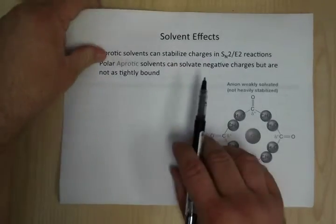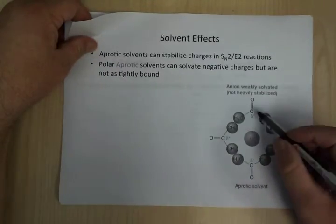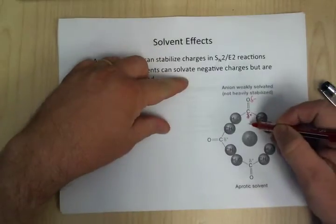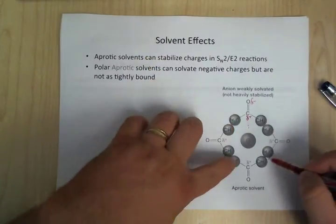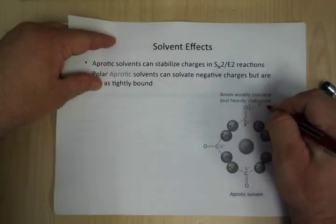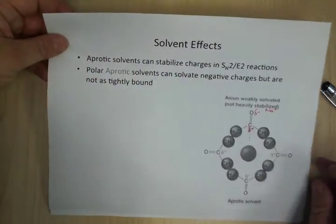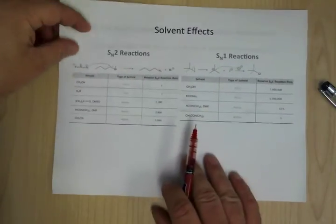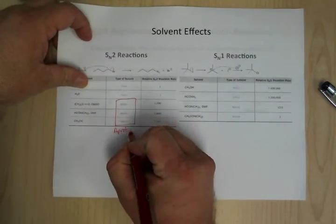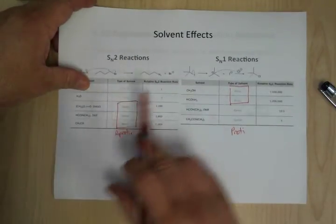Aprotic solvents can solvate negative charges, but they're not as tightly bound. For example, with acetone you have a polar carbonyl bond near the negative charge, but there's steric repulsion from the methyl groups so it can't get very close — stabilizing the negative charge is tough. In general, you want aprotic solvents for SN1 — wait, excuse me — you want aprotic solvents for SN2, and protic solvents for SN1.